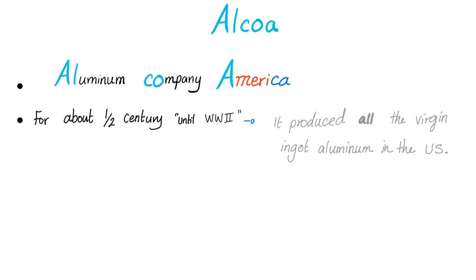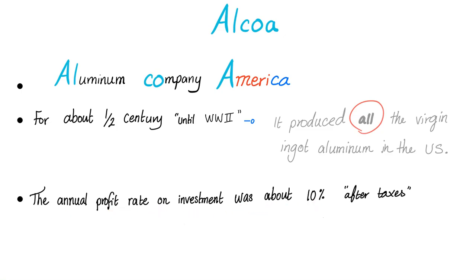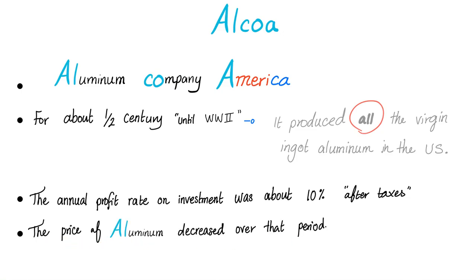For about half a century until World War II, Alcoa produced all the virgin aluminum in the United States. You might expect unconscionable greedy profits and skyrocketing prices, but the annual profit rate was about 10% and the price of aluminum actually decreased over that period. Why? Because of substitutes — if they raised the price too much, you could make those same products from steel or tin. Remember: alternative uses.